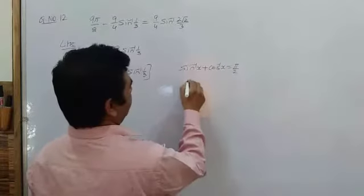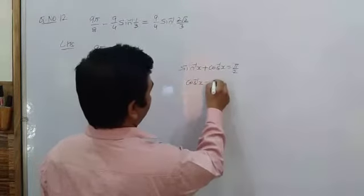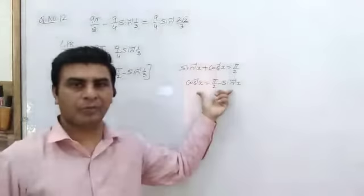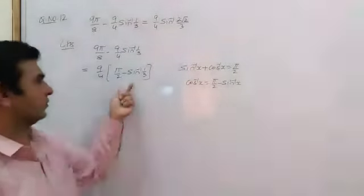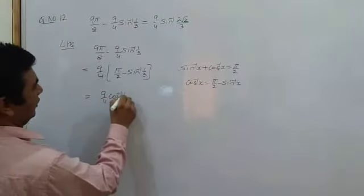Then cos inverse x can be written as π/2 minus sin inverse x. Let's use this property to replace this term by cos inverse x. This is your 9/4 cos inverse 1/3.